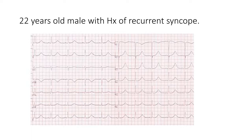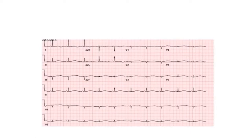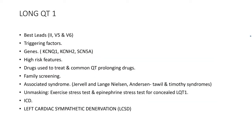The next ECG is from a 22-year-old male with a history of recurrent syncope. There is almost no abnormality except for one thing — the QT interval, which is prolonged. The diagnosis is long QT1. For diagnosing long QT, the best leads are V2, V5, and V6, so always calculate the QT in these leads.